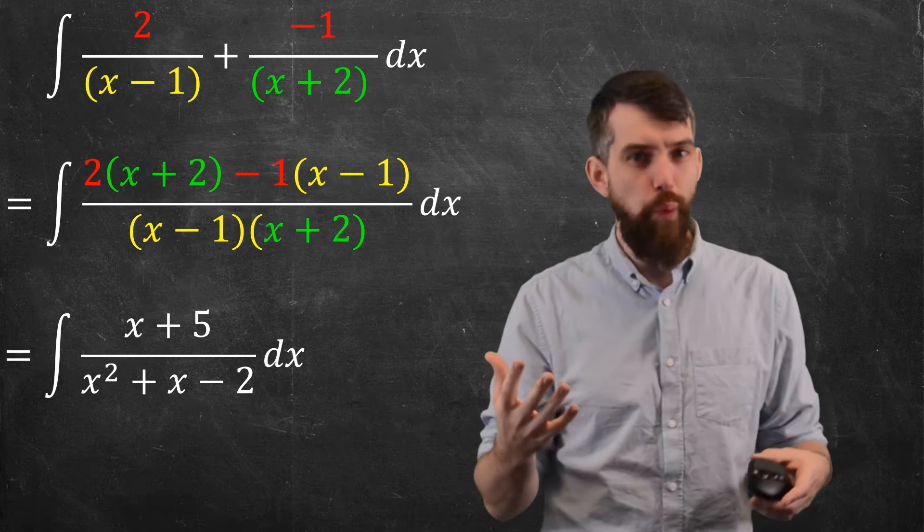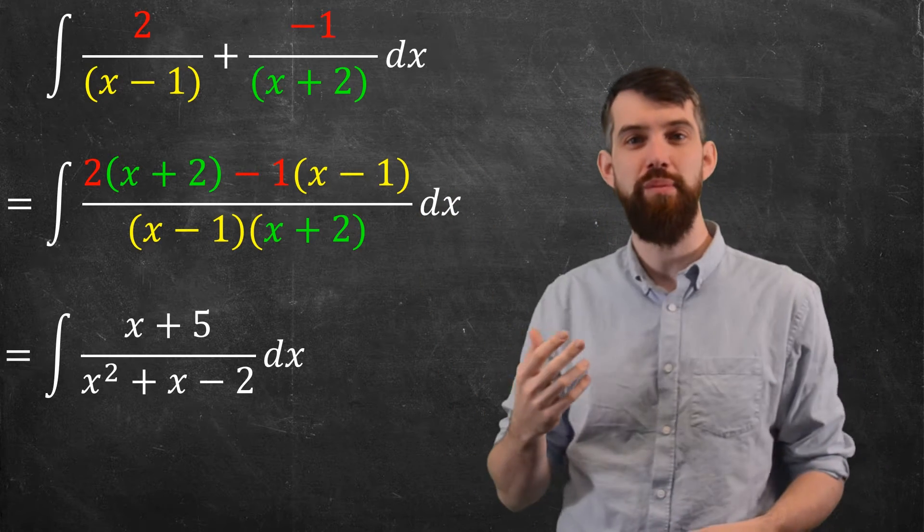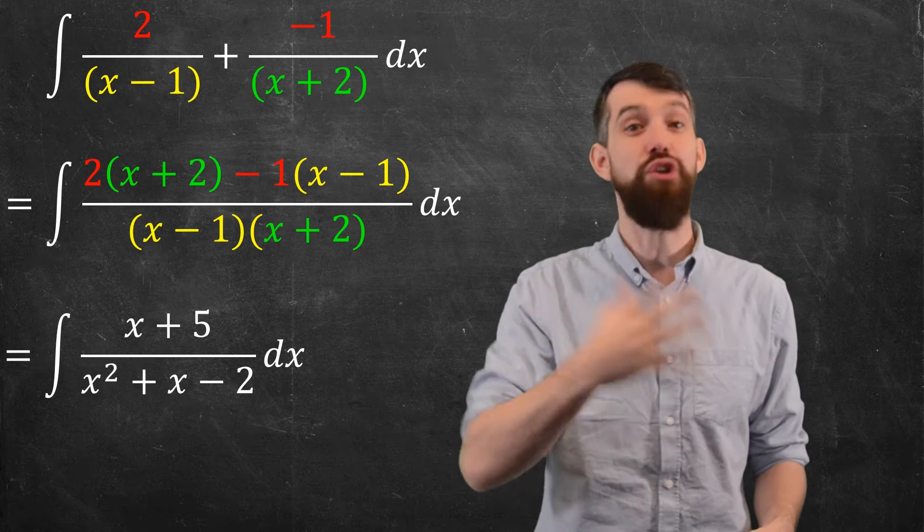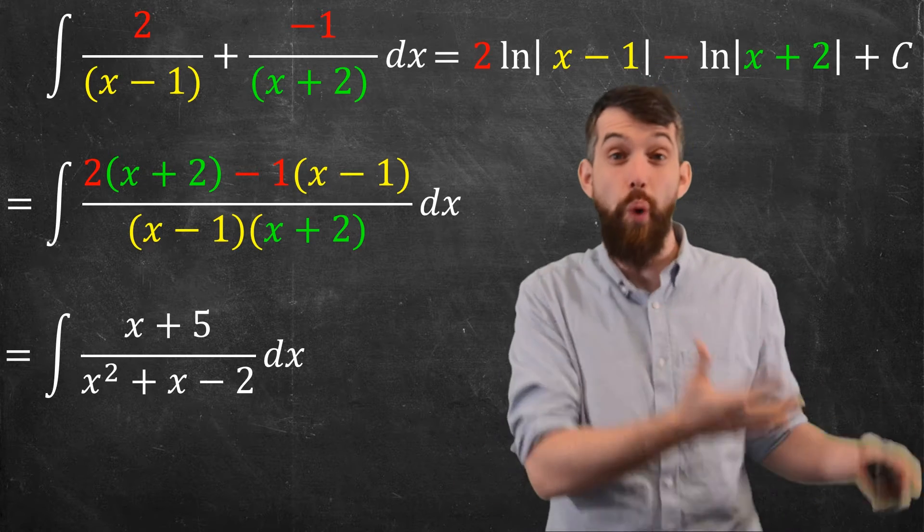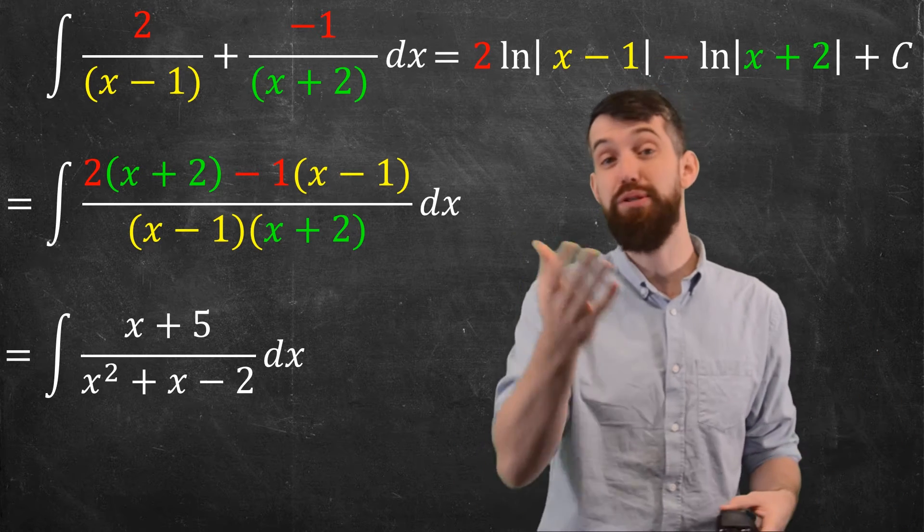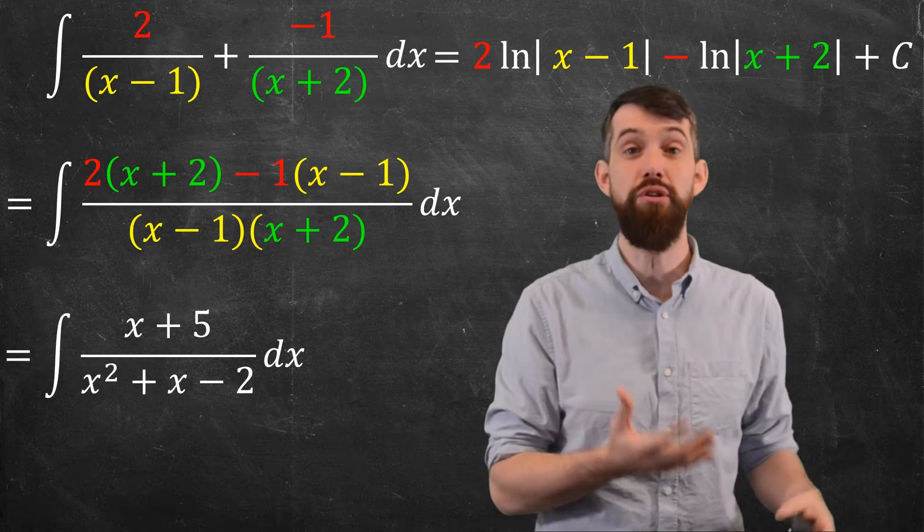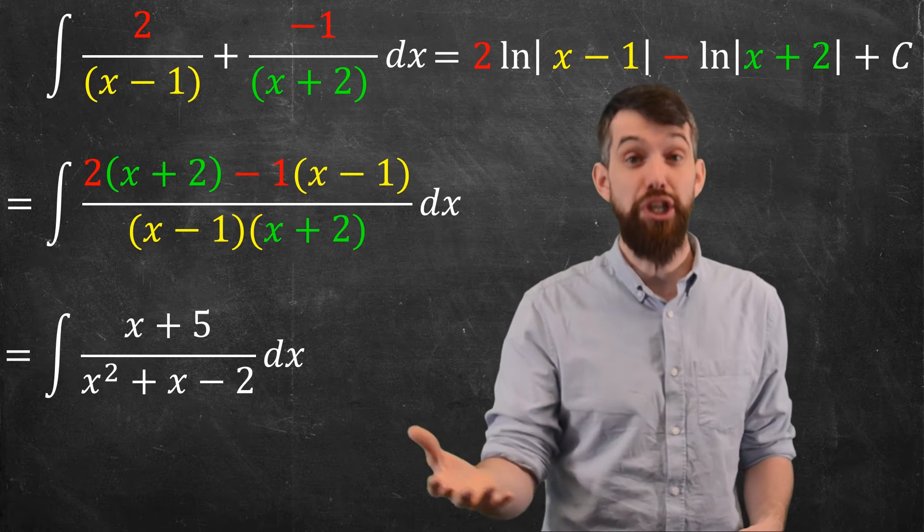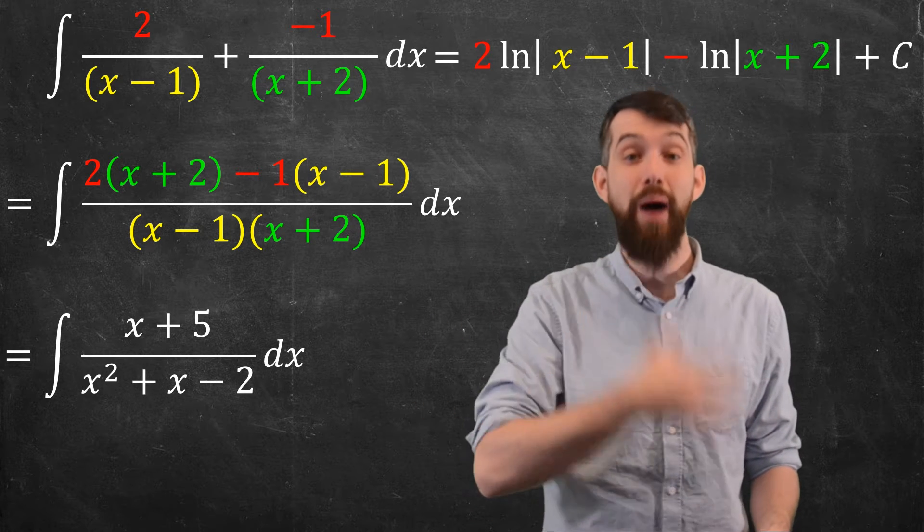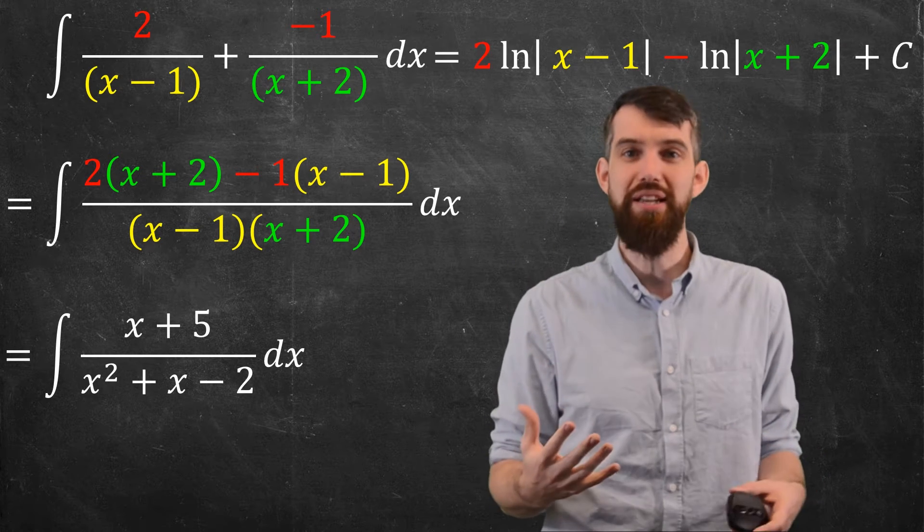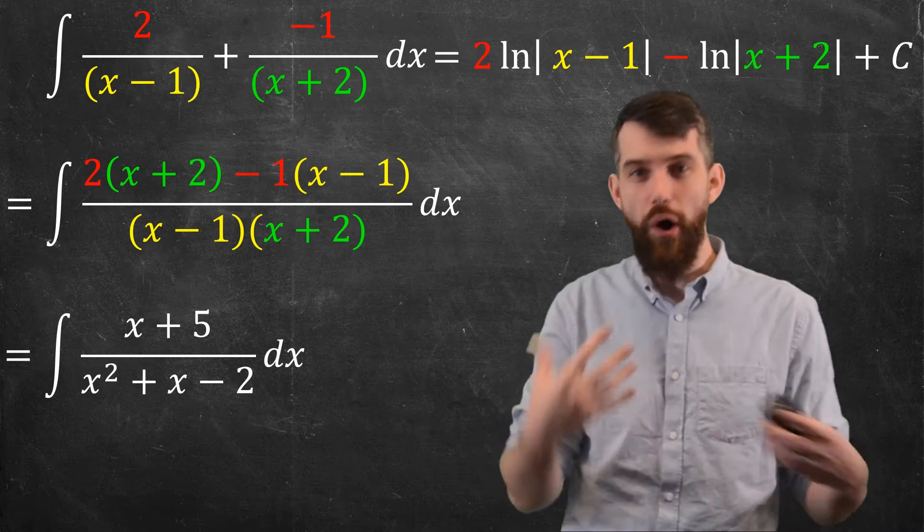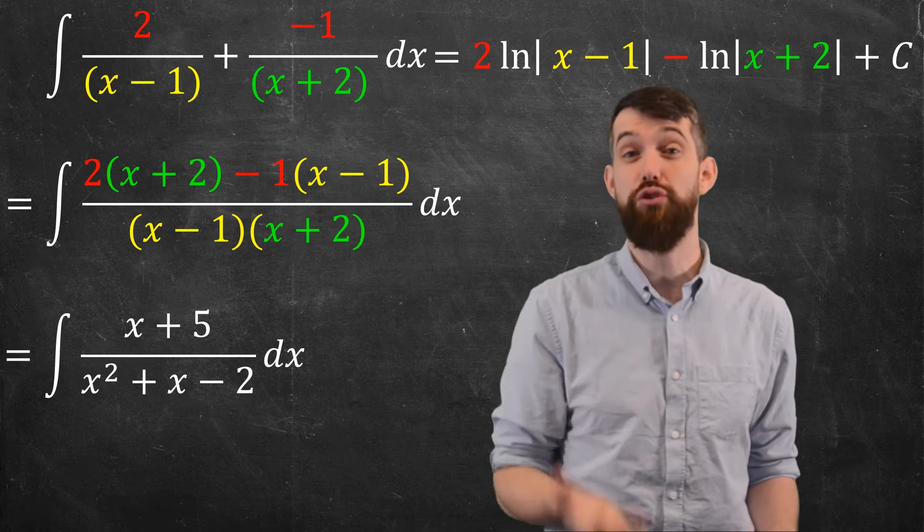However, the top one is something I can do. For example, if I focus on the left-hand side, if I set u equal to x minus 1, then this is just going to be twice the logarithm of the absolute value of x minus 1 after a little u substitution. For x plus 2 as my u, then I'm going to get minus logarithm of x plus 2, and then finally plus c. So the whole point is that this bottom one is hard to do, but the top one is actually straightforward.